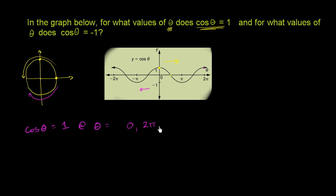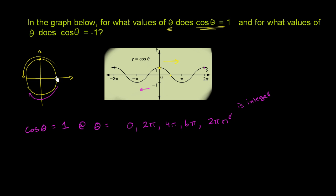It will be 1 again at 4 pi radians, then 6 pi radians. You can see the pattern: we're going to keep hitting cosine of theta equals 1 every 2 pi. So you could view this as every multiple of 2 pi — that is, 2 pi n, where n is an integer. And that applies also for negative values. Going the other way around, we don't get back until negative 2 pi, then negative 4 pi, and so on. If n is an integer, n could be a negative number, covering all the negative values of theta where cosine of theta equals 1.